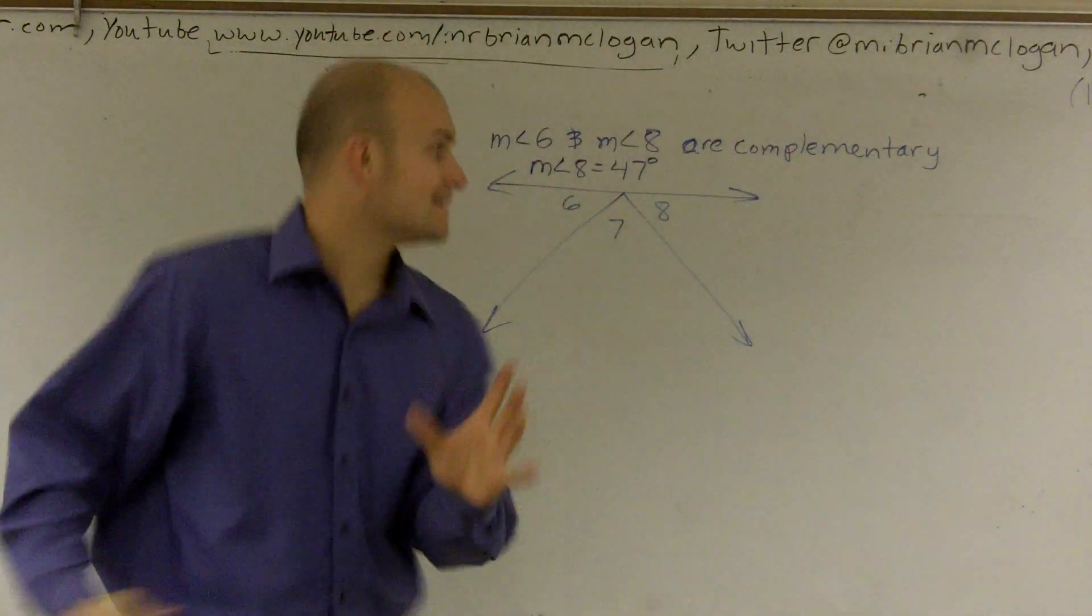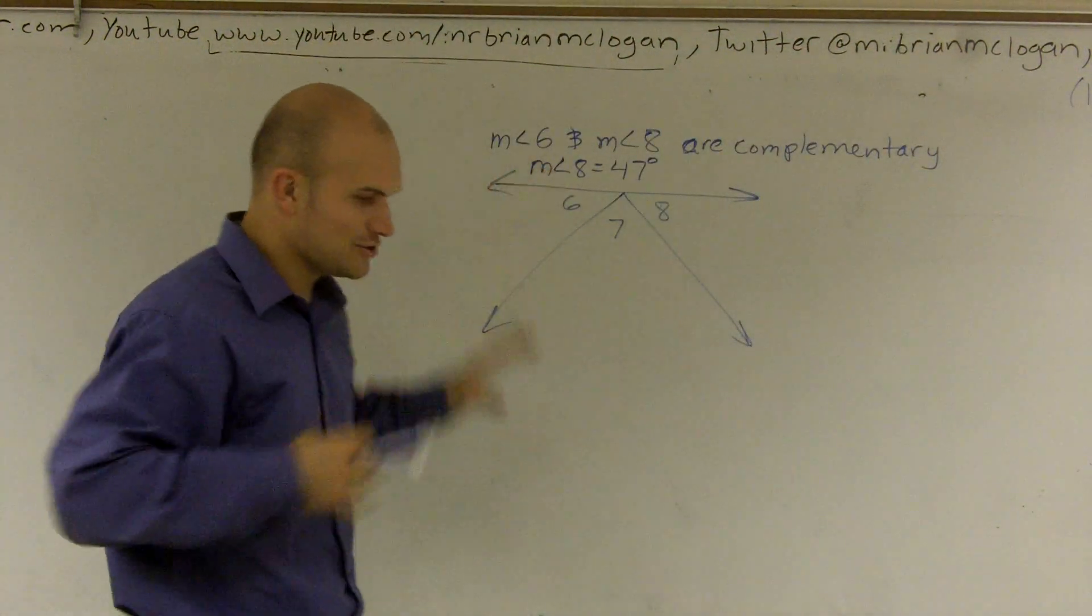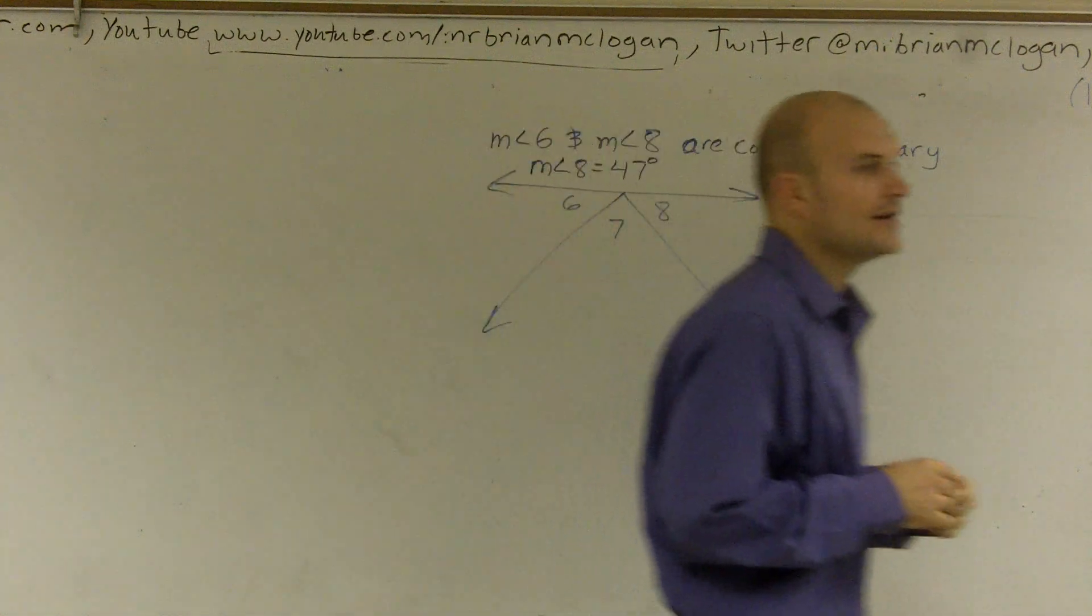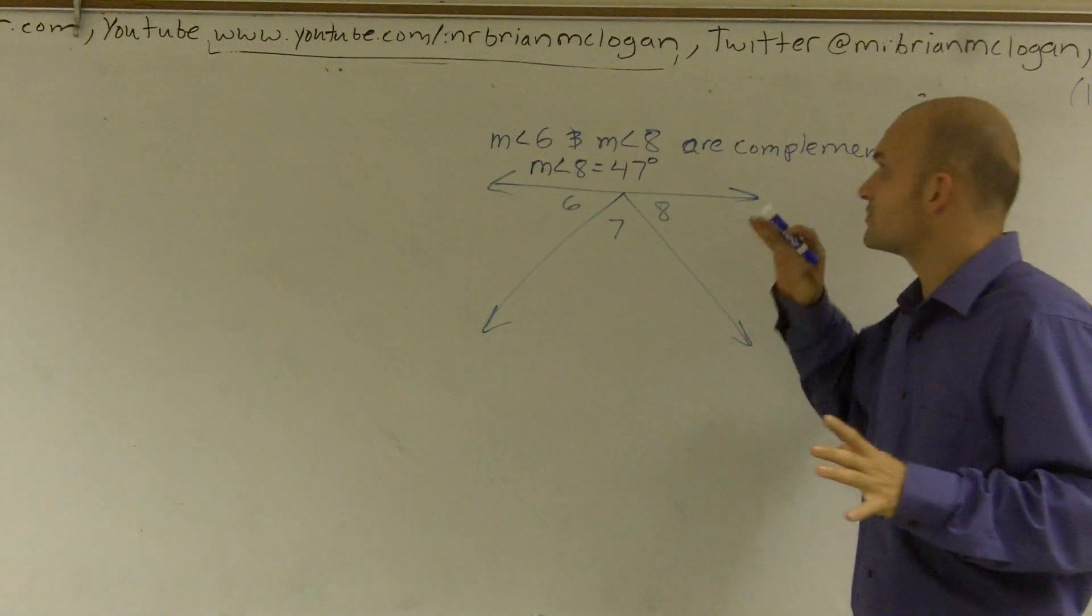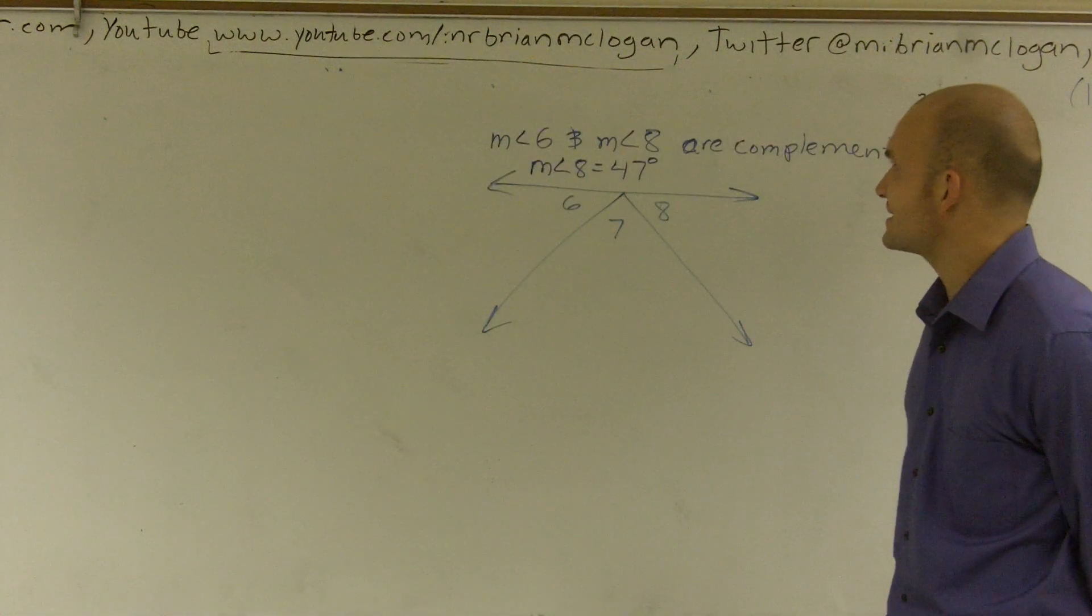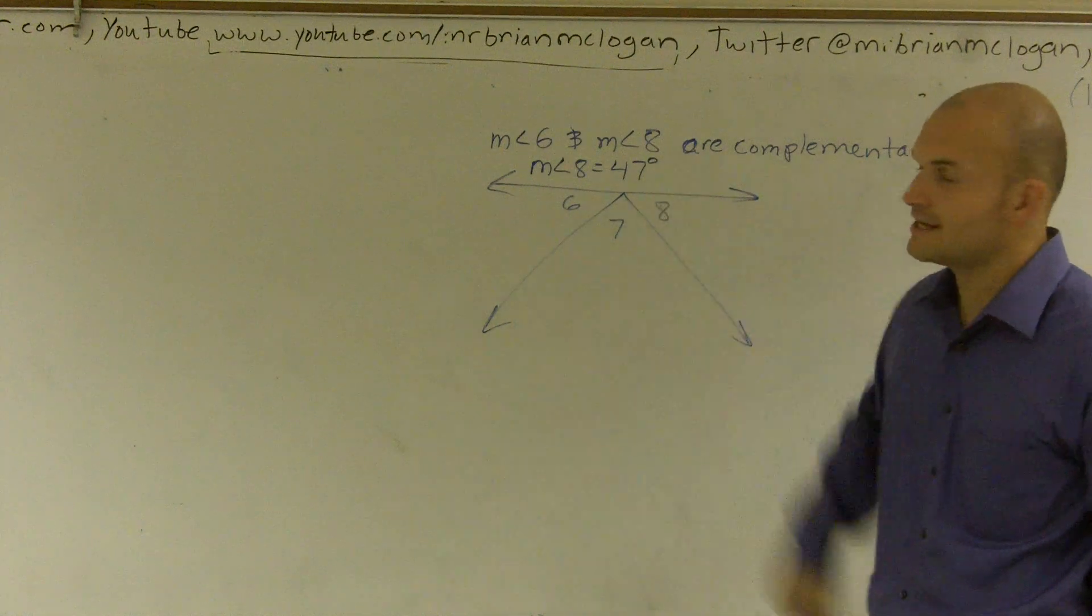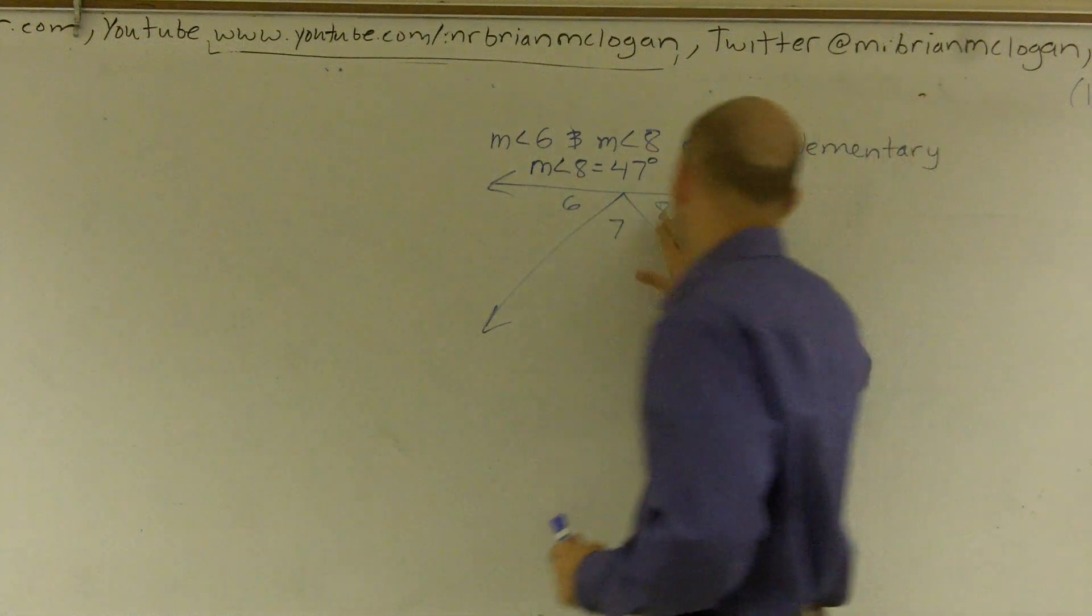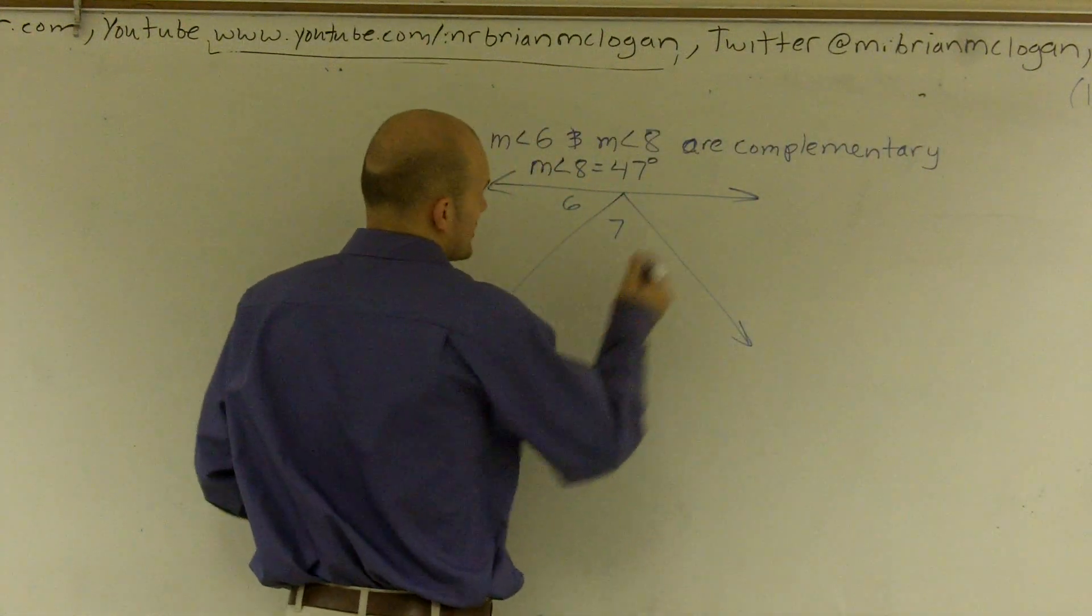OK, what we have here is we have three angles up there, right? And what we're going to want to do is we need to find the value of 6, 7, and 8. So they say measure of angle 8 is 47 degrees. So I'm going to write that in.